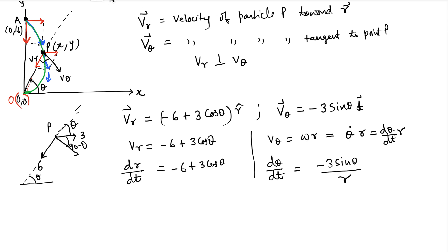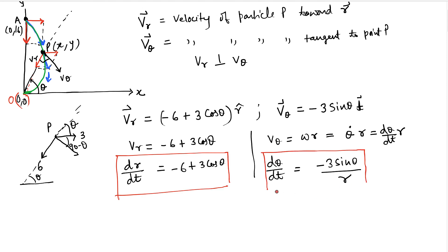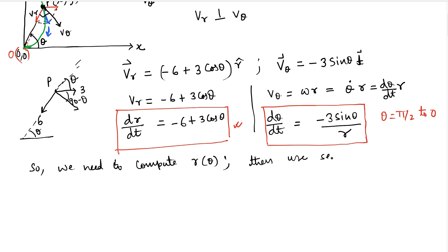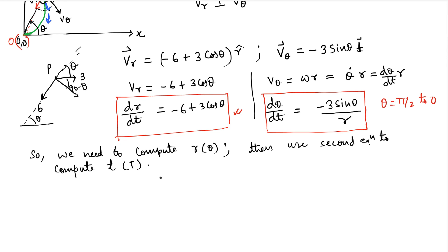The second equation will give us time — our goal is to compute time as θ goes from π/2 to 0. But we don't know r, and r is a function of θ. So we first need to compute r as a function of θ, then use the dθ/dt equation to compute time.